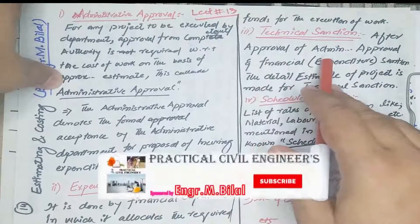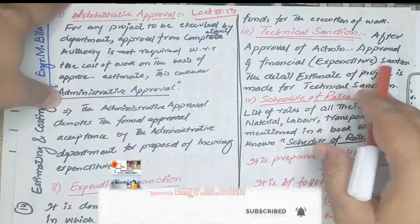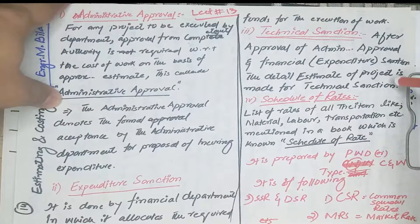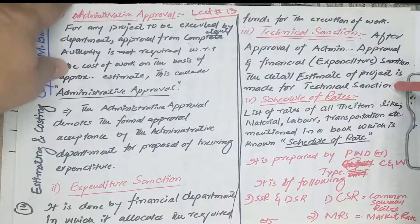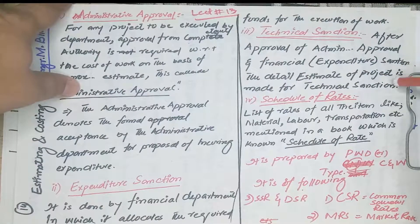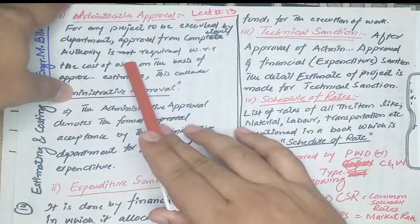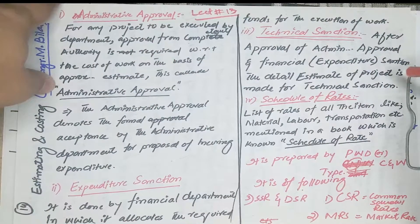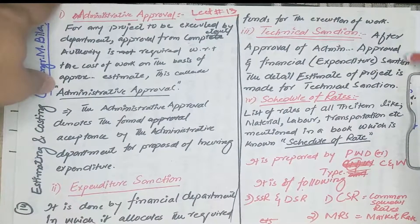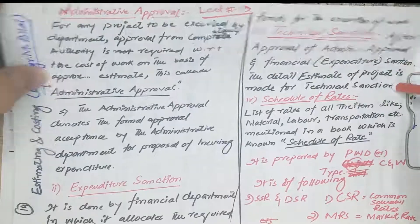The technical sanction comes after approval of Administrative Approval and financial or expenditure sanction. The detailed estimate of the project is made for technical sanction, prepared in the form of a technical sanction. The same estimate may be technically sanctioned by the competent forum. In the technical sanction, there is a limit of up to 10% over the administrative approval. If there are changes in the original estimate, we can increase the estimate by 10% on the total approved administrative cost. This 10% is the allowance for approval of the technical sanction.